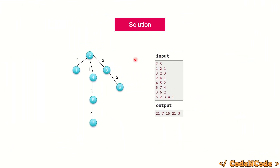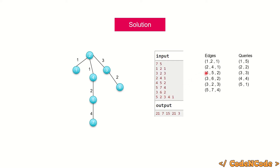We sort the edge set by weight and also sort the query set by value. Along with the queries I've stored their original indices — their positions — because finally we have to print the answer for each query at its original position even though we process it in sorted order.